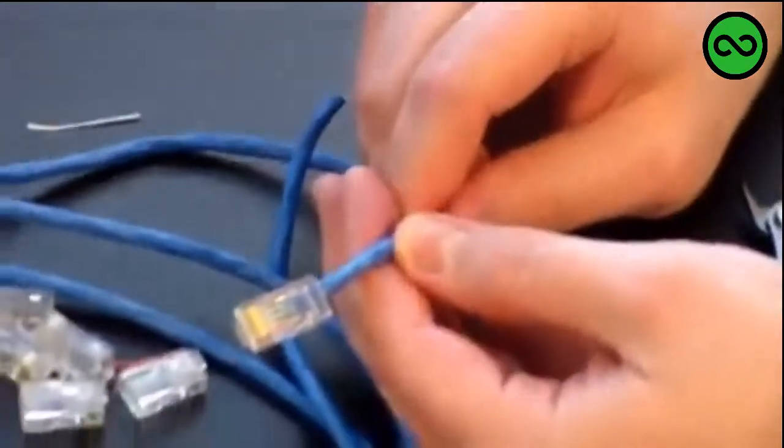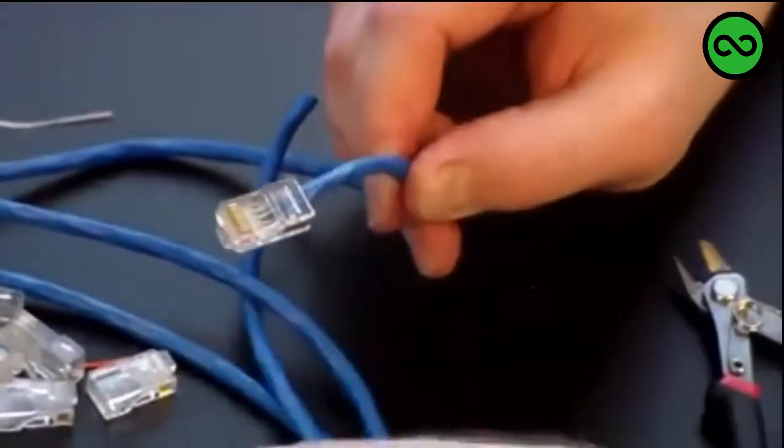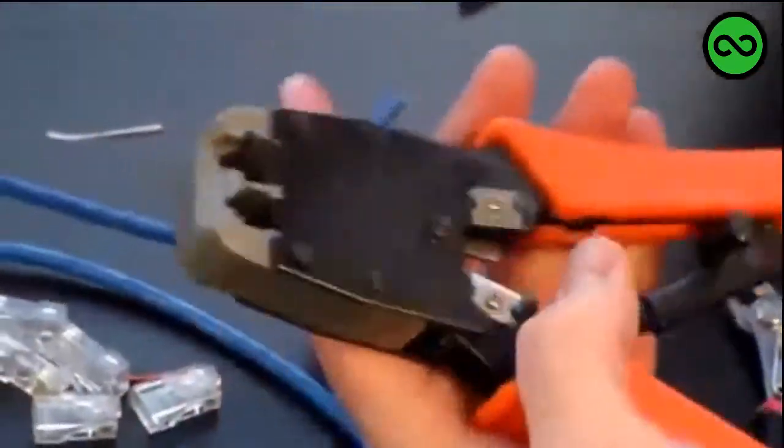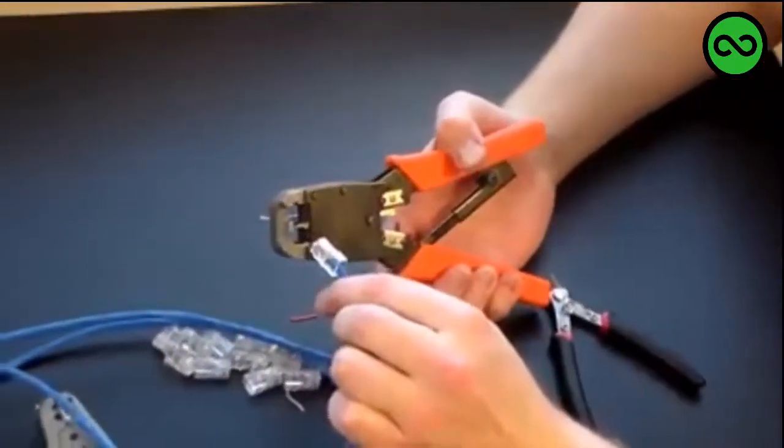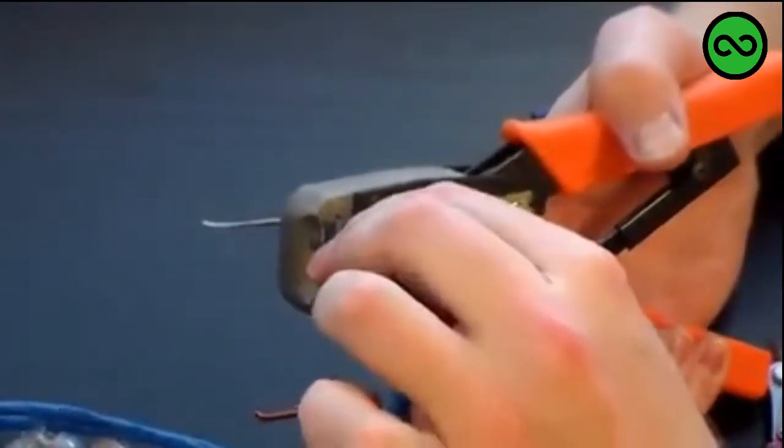Okay, so next you want to grab the FD-500R tool and you want to insert the connector into the top right slot. It clips in kind of like you clip it into a wall jack. All right, get that clipped inside. You'll hear a little lock click.